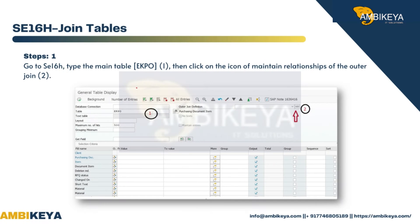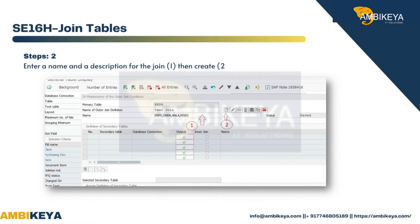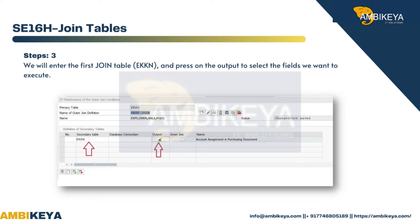Step 1: Go to SE16H and type the main table EKPO, then click on the icon to maintain relationships of the outer join. Step 2: Enter a name and a description for the join, then click Create.